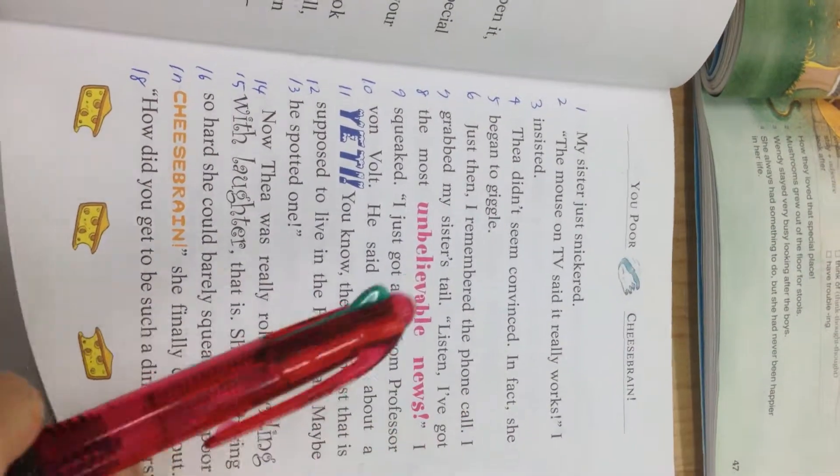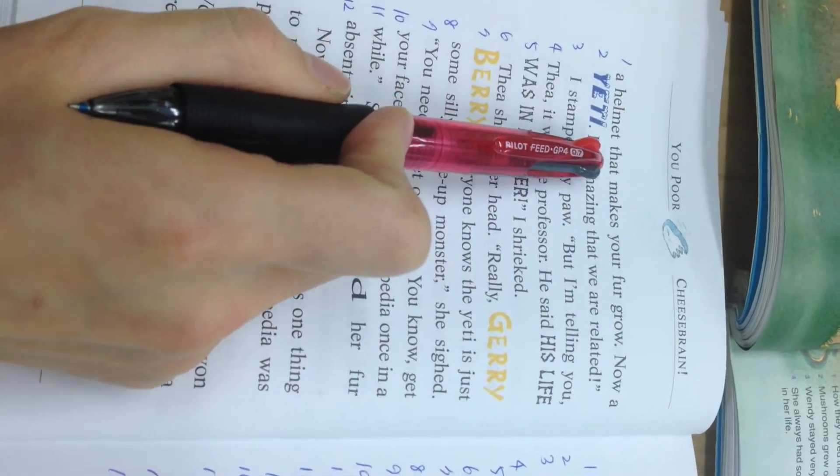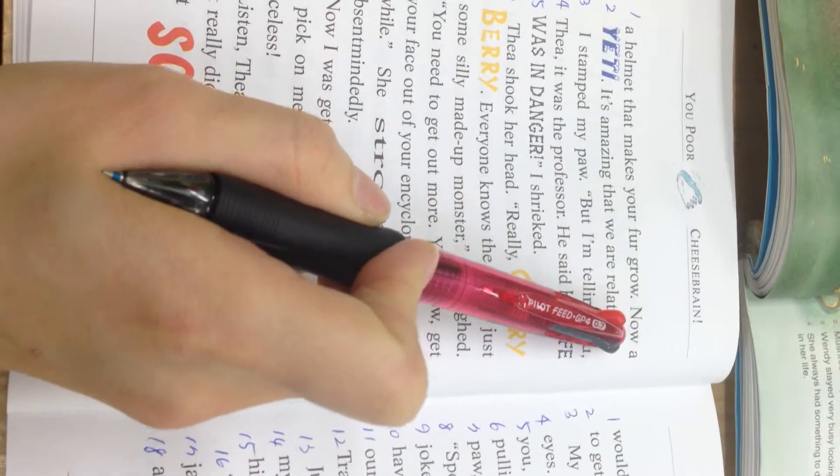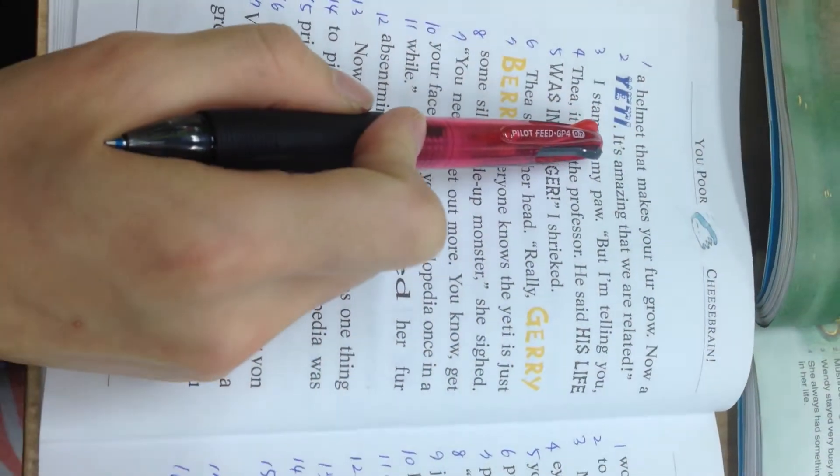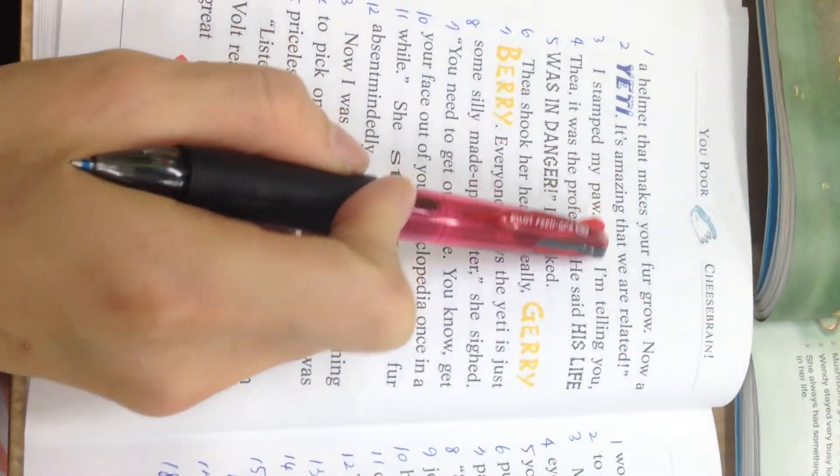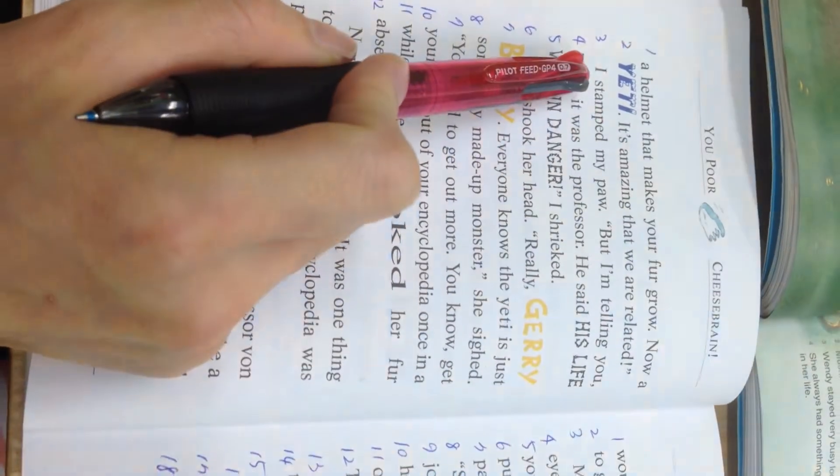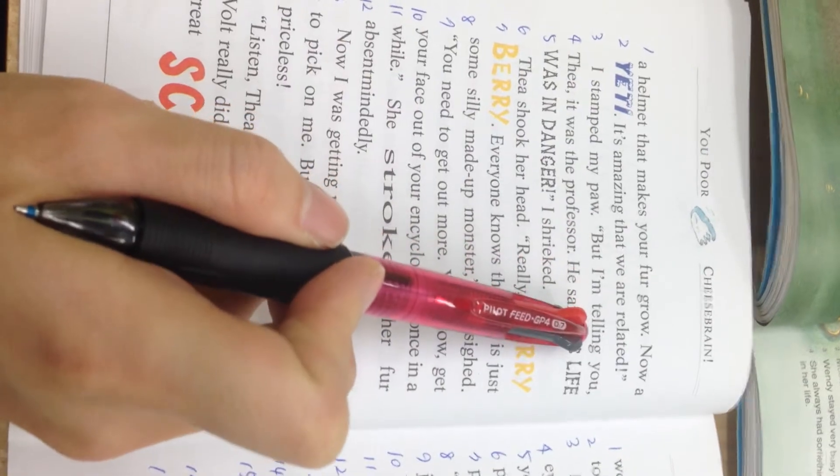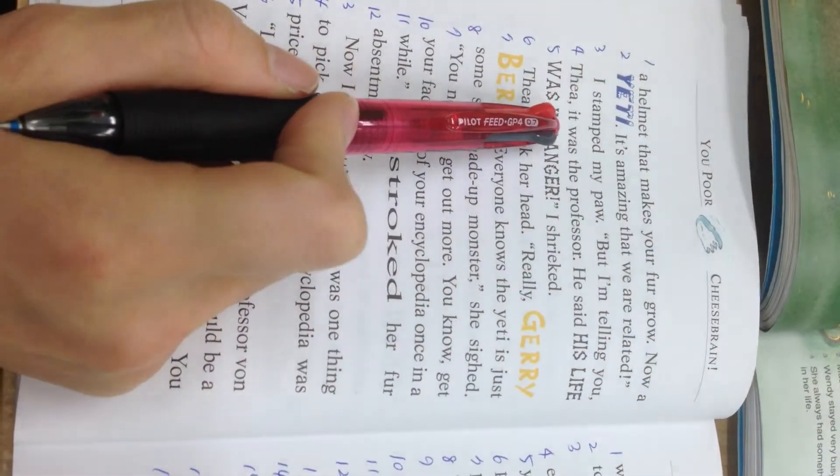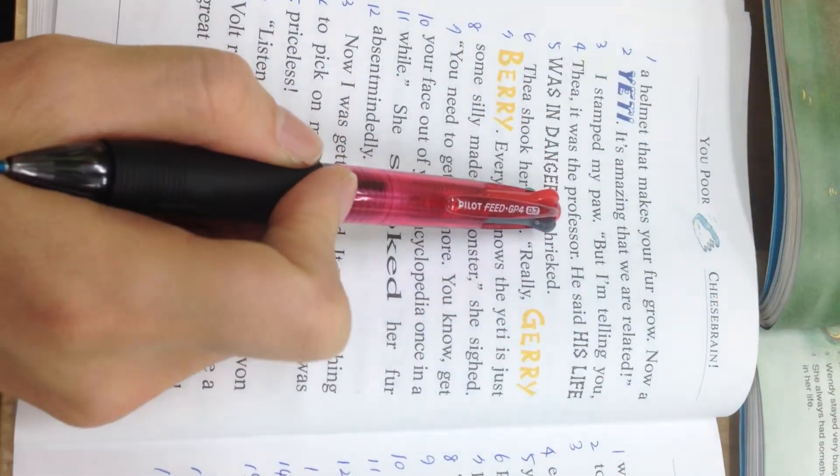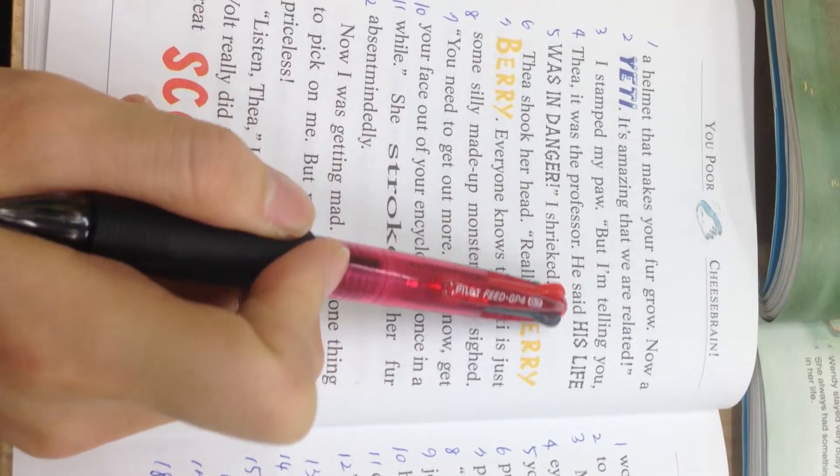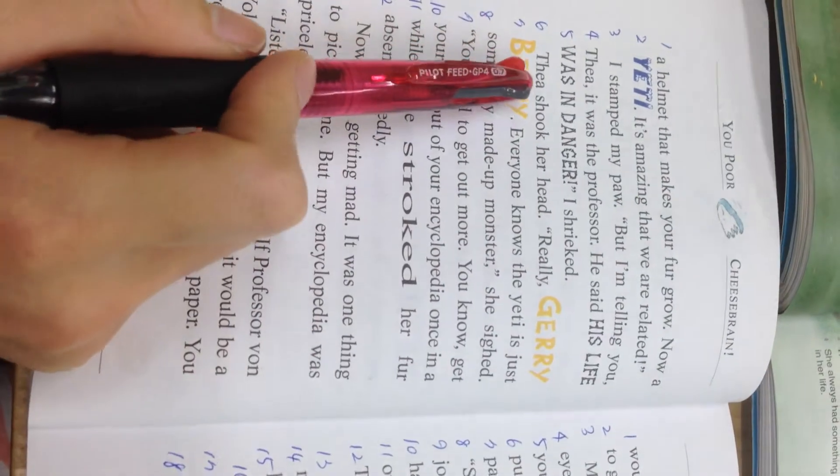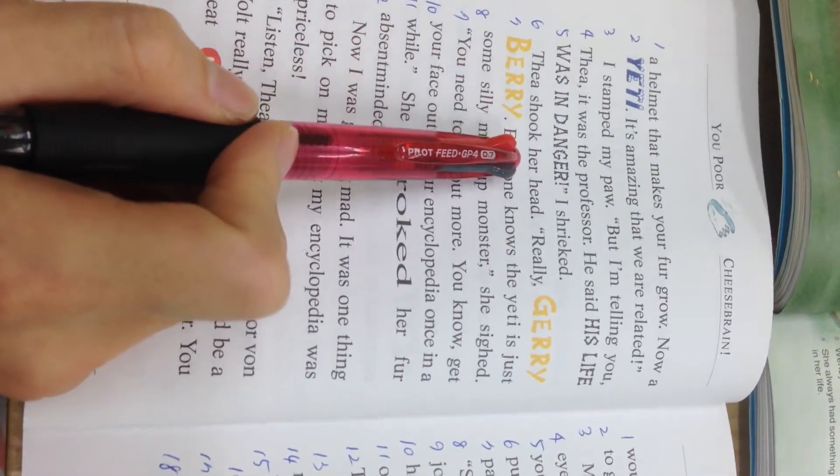First, a helmet that makes your fur grow. Now, a yeti. It's amazing that we are related. I stamped my paw. But, I'm telling you, Thea, it was the professor. He said his life was in danger, I shrieked. Thea shook her head.